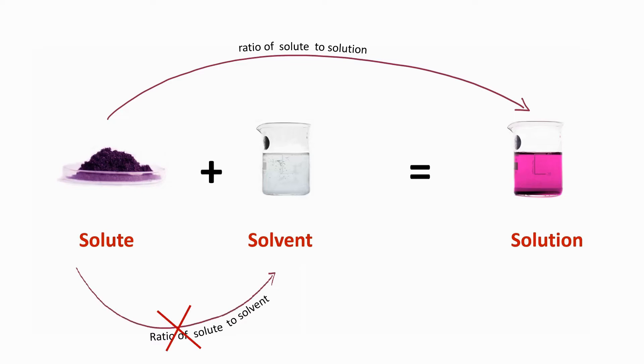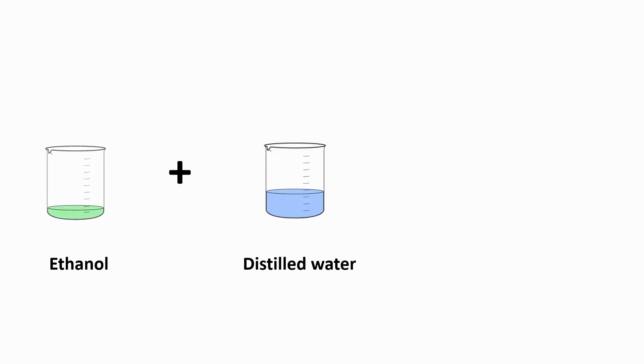Let us consider a homogeneous mixture of ethanol and water. Imagine that you are taking 20 milliliters of ethanol and 30 milliliters of distilled water to make a solution. Here, both the solute and the solvent are colorless liquids, but for illustration purpose, we have shown them in color.